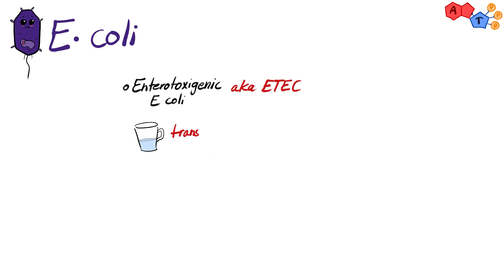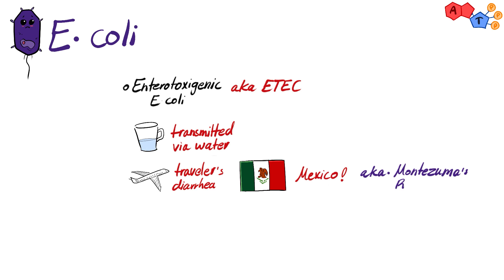Let's begin with enterotoxigenic E. coli, or ETEC for short. It's transmitted via water and is associated with traveler's diarrhea. And it's called so because of the classical clinical presentation, which is traveling to Mexico, where the patient drinks the contaminated water. Traveler's diarrhea is also known as Montezuma's revenge.